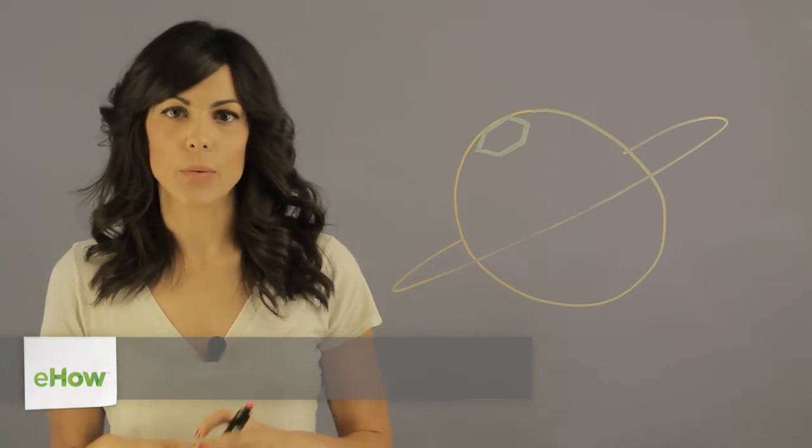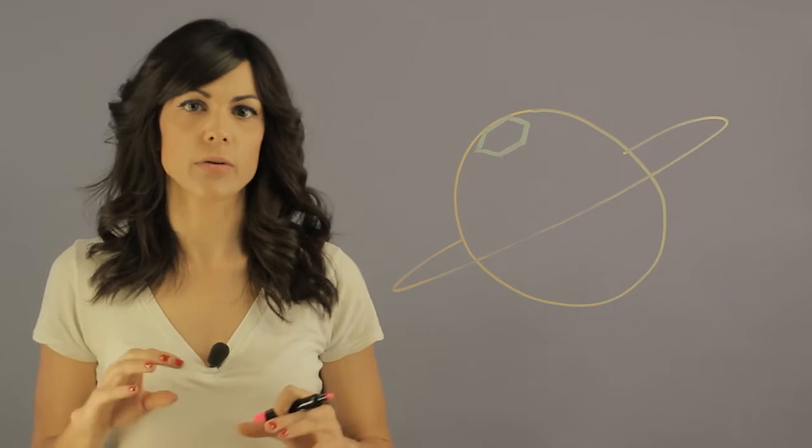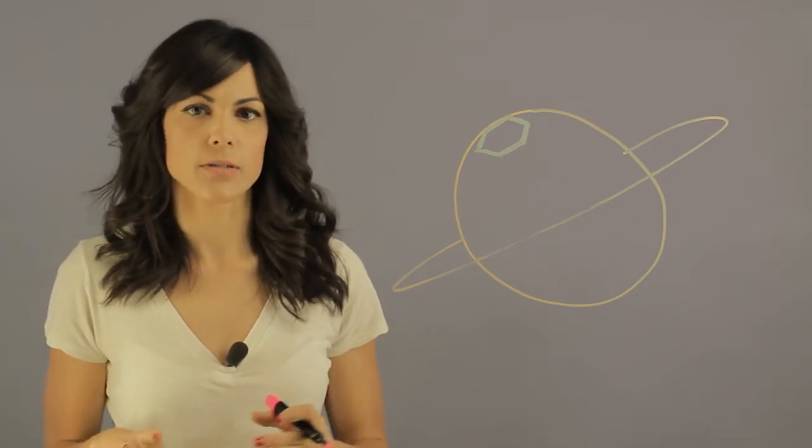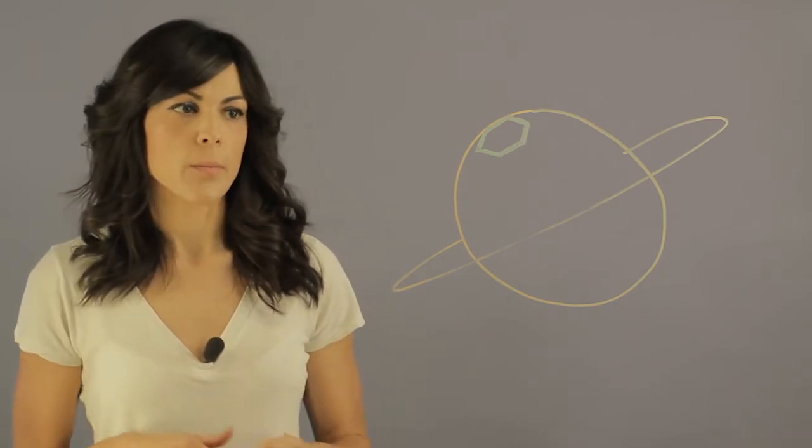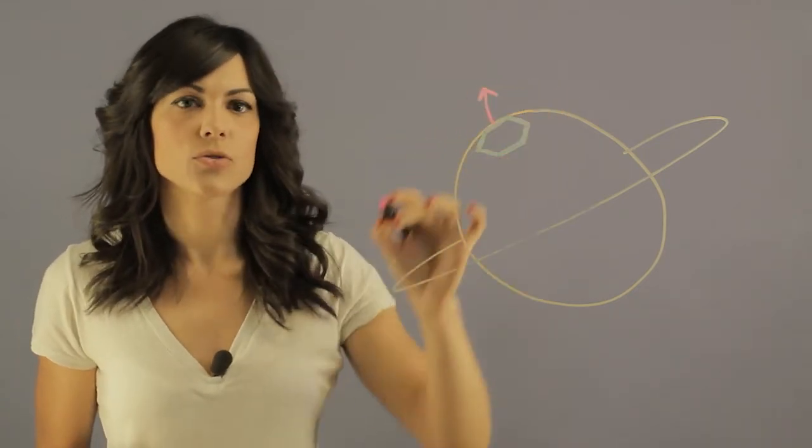Recently when we looked at the North Pole of Saturn, what we found was something quite strange and we haven't really figured out a lot about it. But what we see is that at the North Pole we have a hexagon storm.